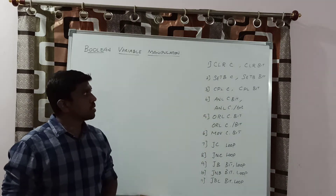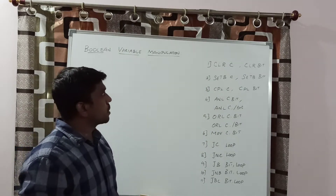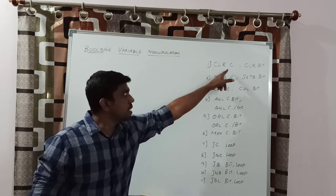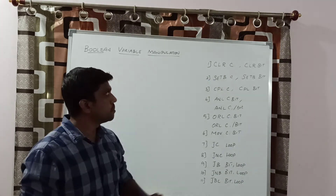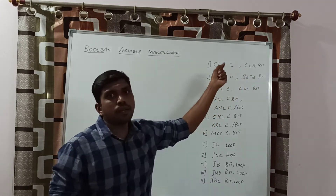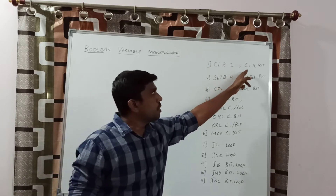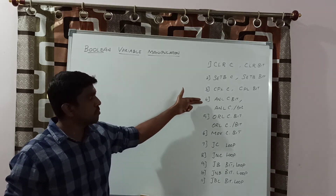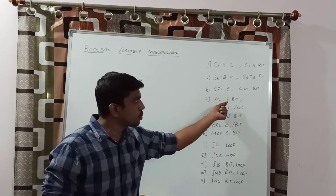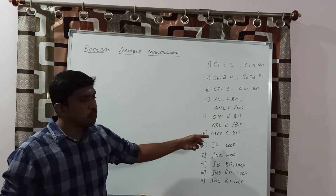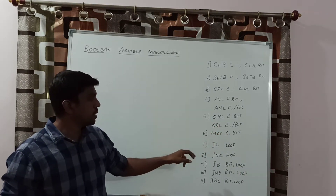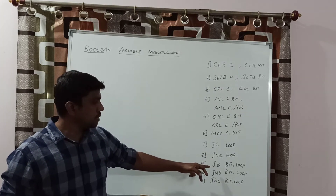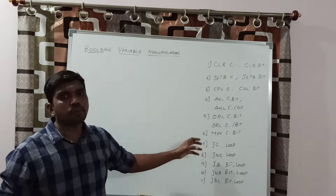These are the list of instructions under Boolean expression in 8051 Microcontroller. The first instruction is CLR, which clears the bit value. CLR C clears the carry bit. CLR bit clears any specified bit from a register or port. Next is SETB, then complement (CPL). Fourth is AND function between two bits. Fifth is OR function. Sixth is MOV to move a bit from source to destination. Instructions seven through eleven are branch group instructions: JC, JNC, JB, JNB, and JBC. These instructions also operate on a single bit.